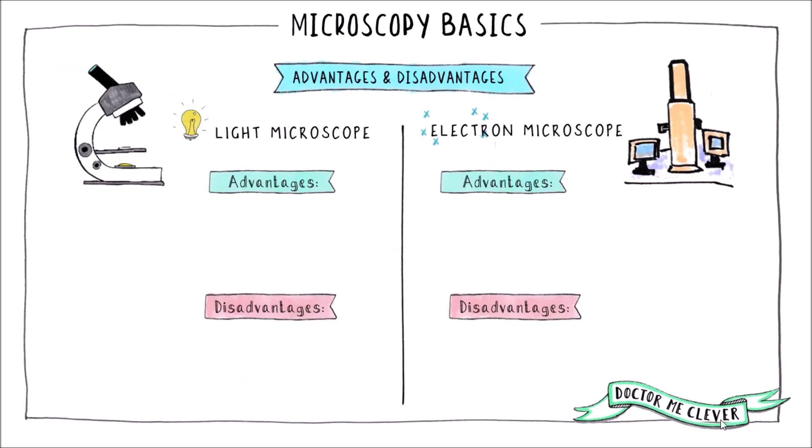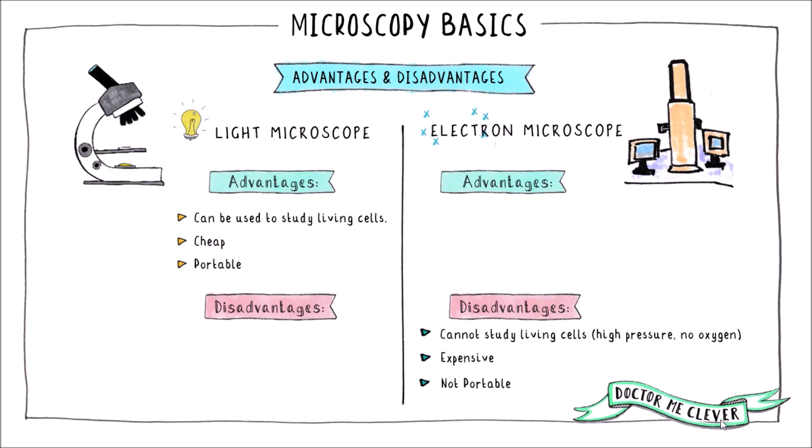Electron microscopes, although amazing, do have some drawbacks, and you need to be aware of the advantages and disadvantages of both. Light microscopes can be used to study living cells or organisms; however, electron microscopes can only view dead specimens due to the high pressure and vacuum needed. The light microscope is cheap and portable, whereas the electron microscope is very expensive, huge, and takes a great deal of effort to move. The overriding advantage of an electron microscope is its amazing ability to produce high magnification and high resolution images, which is much lower in a light microscope by comparison.